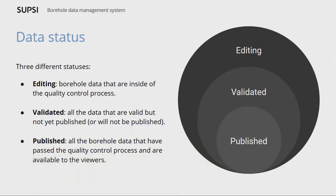Data can have mainly three kinds of status. The editing status is while it is in the validation and creation process. The validated data status is all data that have passed all the quality checks. And finally, the published data are the data that are exposed to the public.